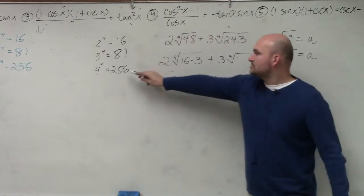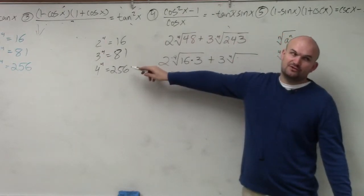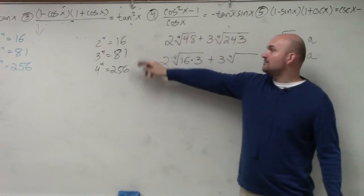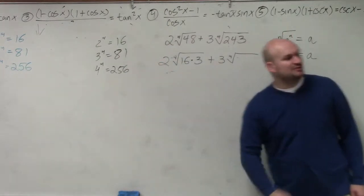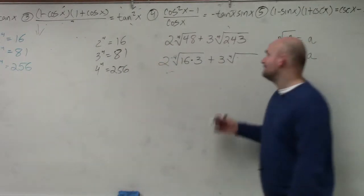We always start with the largest number. So 256 is obviously greater than 243. So we're not going to do that one. So then we go to 81. Does 81 divide into 243? Yes. How many times? Three. Three.